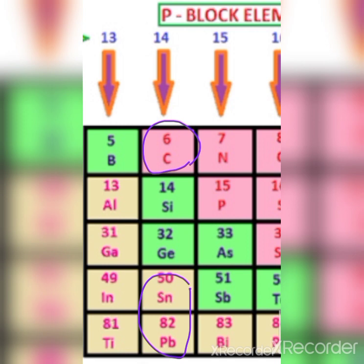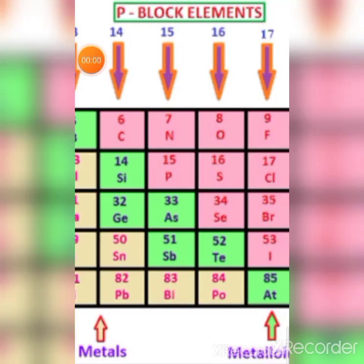In group 14, silicon and germanium are metalloids. In group 15, the nitrogen family, there are two non-metals — nitrogen and phosphorus. There are two metalloids — arsenic and antimony — but only one metal, which is bismuth.